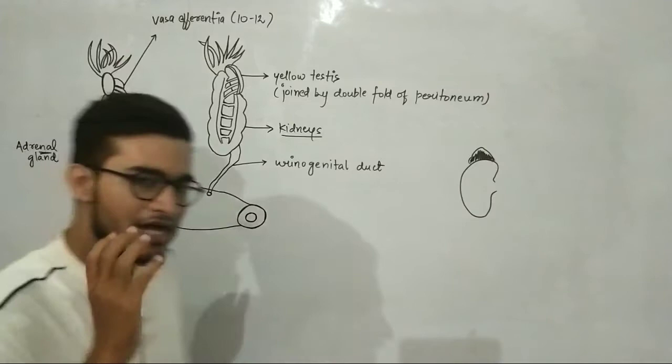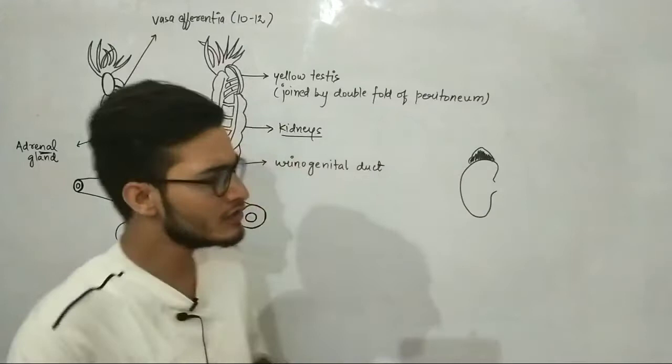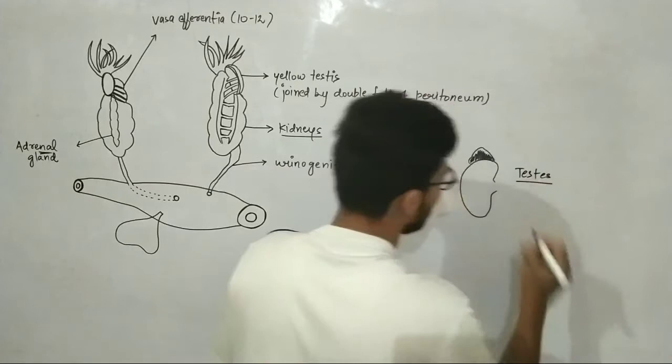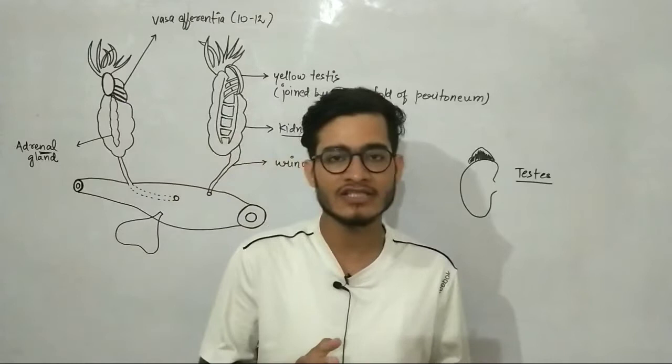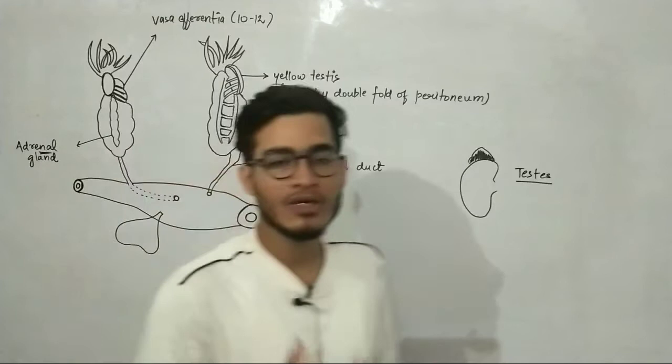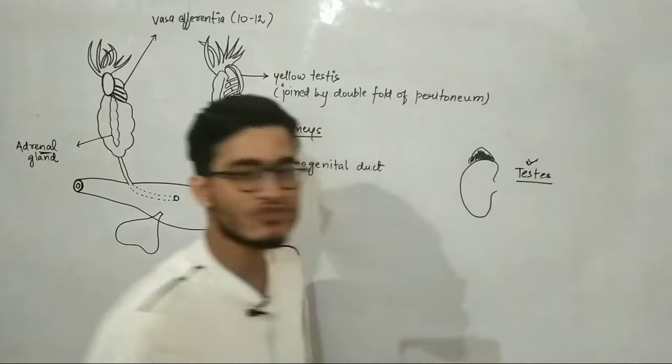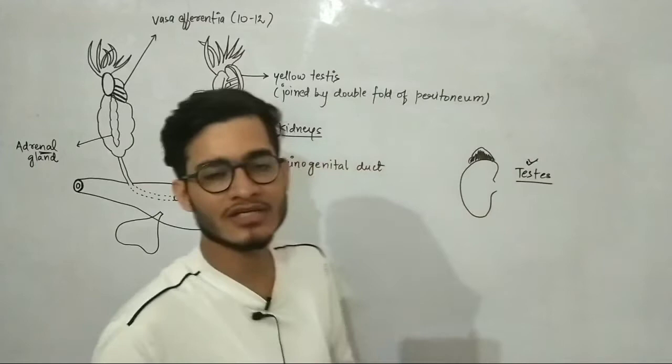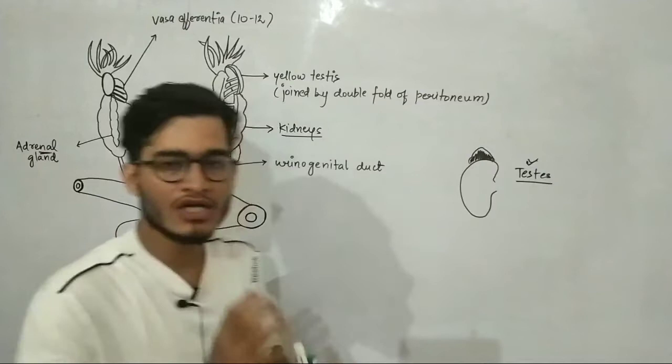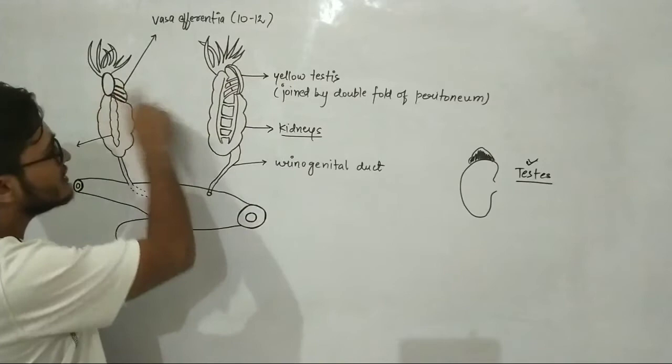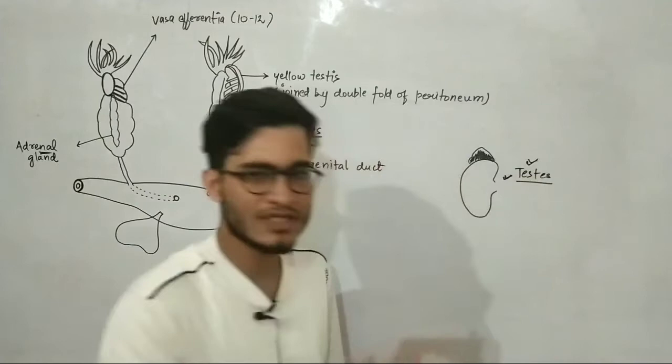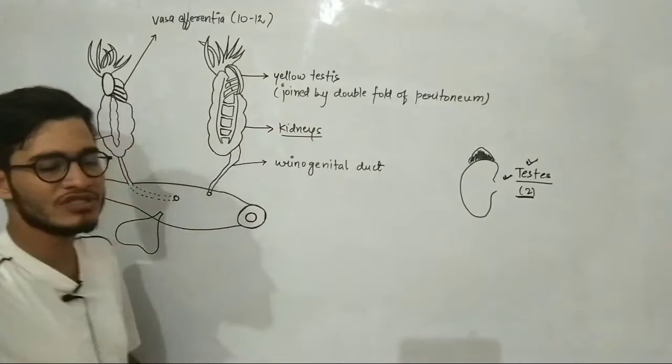Now if we talk about the male reproductive system, there are some things which are going to be constant. The very first thing is testes. Testes is important because when you talk about sexual reproduction it becomes very essential to talk about the gametes, to talk about the sperm. Who will produce the sperm? Obviously the primary sex organ which is testes in case of male. Two testes, it means they occur in pair.